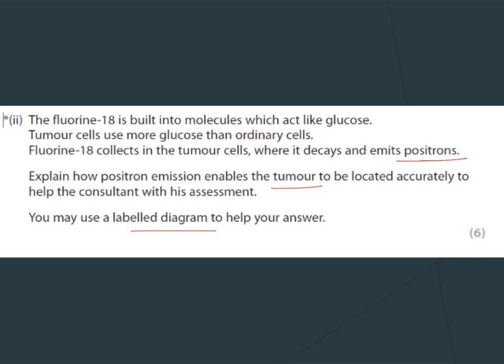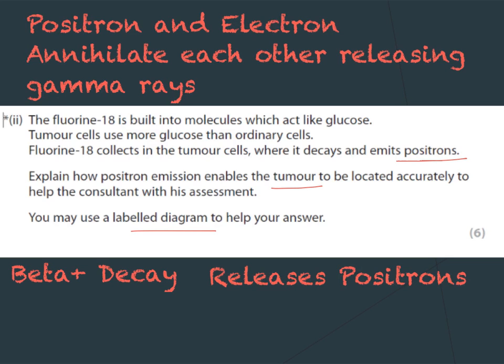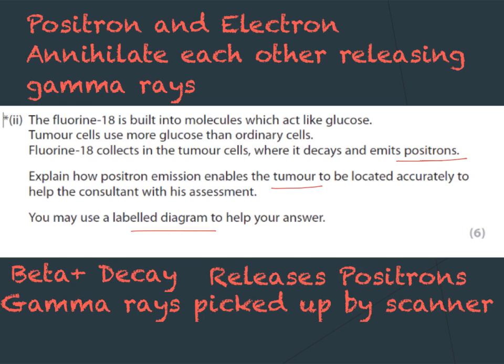For this question, we need to start by talking about the fact that the isotope will decay via beta-plus, releasing positrons. Once released, the positrons collide with the electrons that exist naturally in the target organ. When the positron and electron collide they annihilate each other, releasing gamma rays. It is these gamma rays that are picked up by the scanner — the positrons do not leave the target organ; only the gamma rays leave, pass through the skin, and are detected. The gamma rays are released in opposite directions, and finally the location of the tumour can be detected accurately using triangulation.